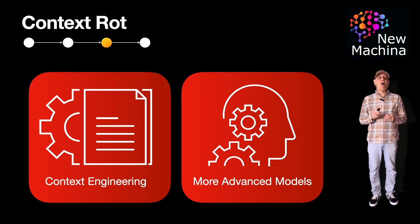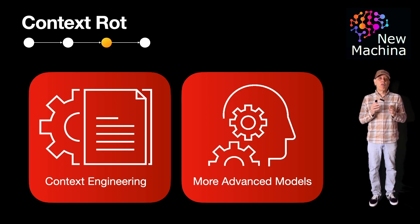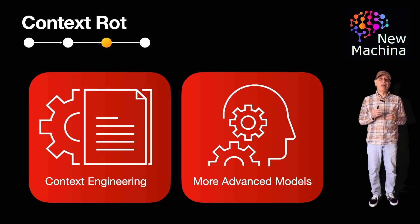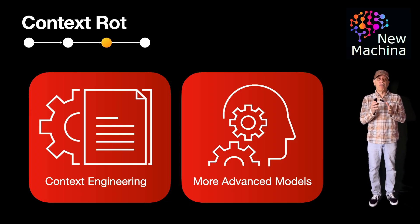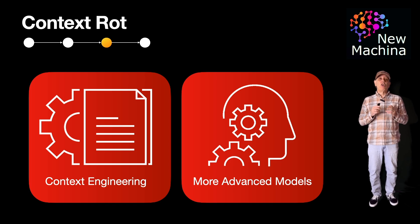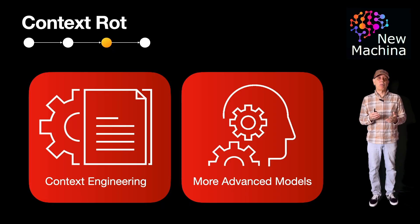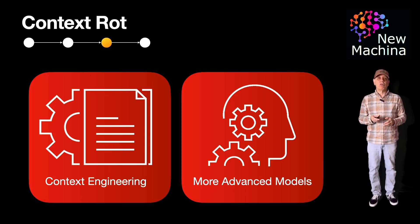So why is understanding context rot important? For you, the system builder, understanding context rot is crucial for improving AI and LLM-driven systems, ensuring they deliver coherent and relevant outputs. In short, knowing about context rot helps us build better AI systems that communicate more effectively with our users.